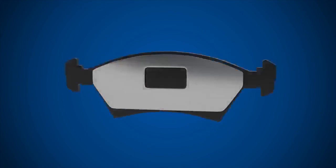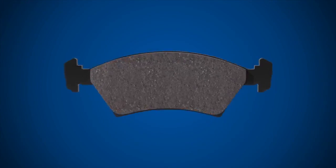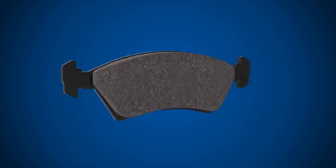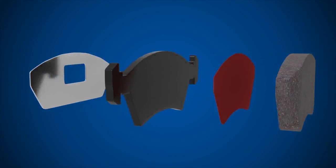Brake pads squeeze against the brake disc and produce the friction required to slow the vehicle. At the back of the brake pad, there is a shim, which is designed to reduce vibration and noise.